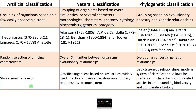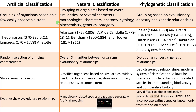Phylogenetic classification depicts genetic relationships. As a modern system of classification, it helps in prediction of characteristics in related species, in understanding biodiversity, and in comparative biology. The disadvantage of artificial classification is that it does not show evolutionary relationships — distant groups may be placed together.